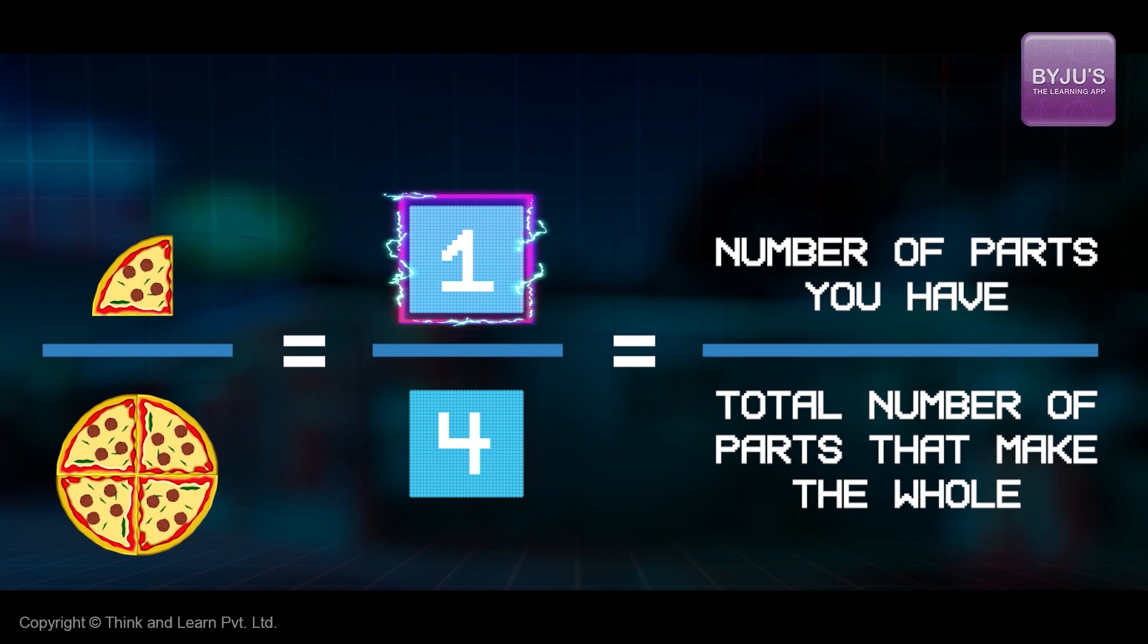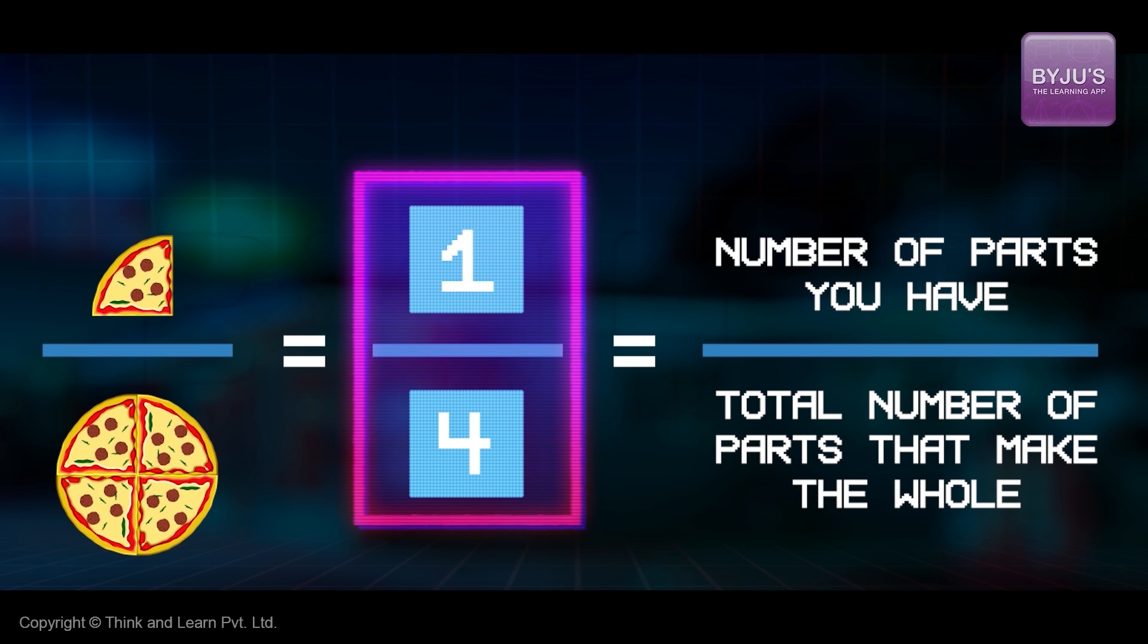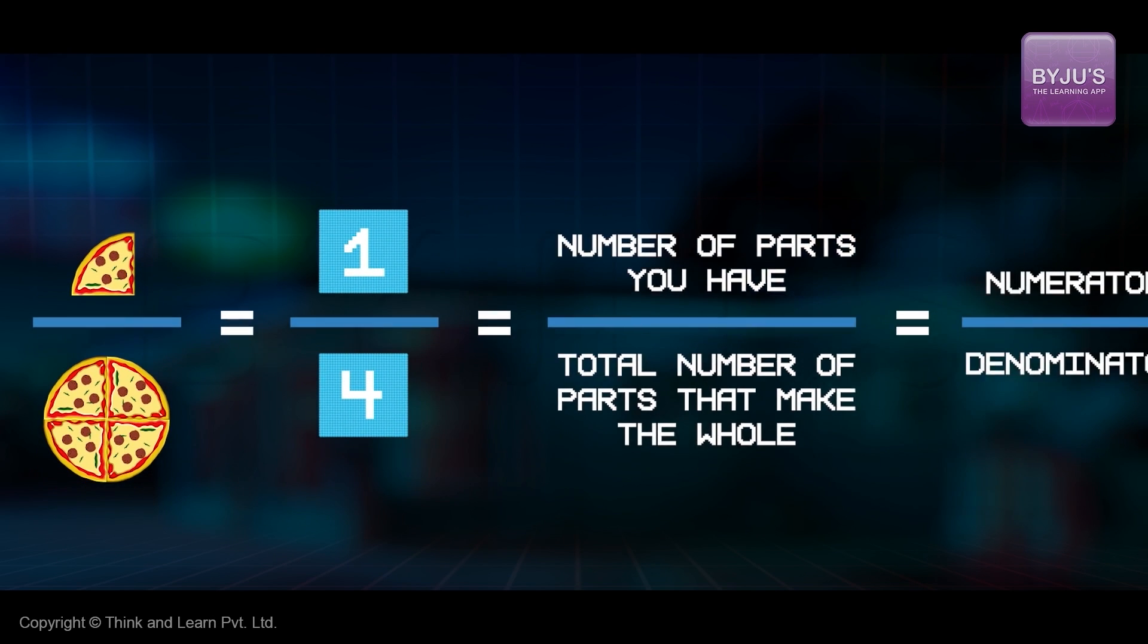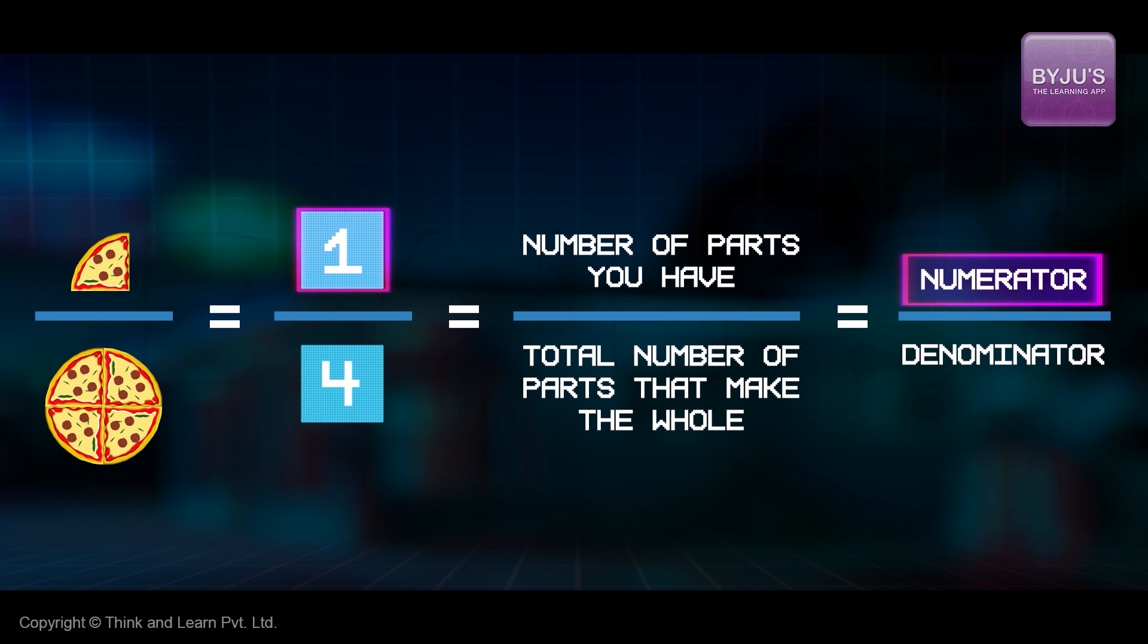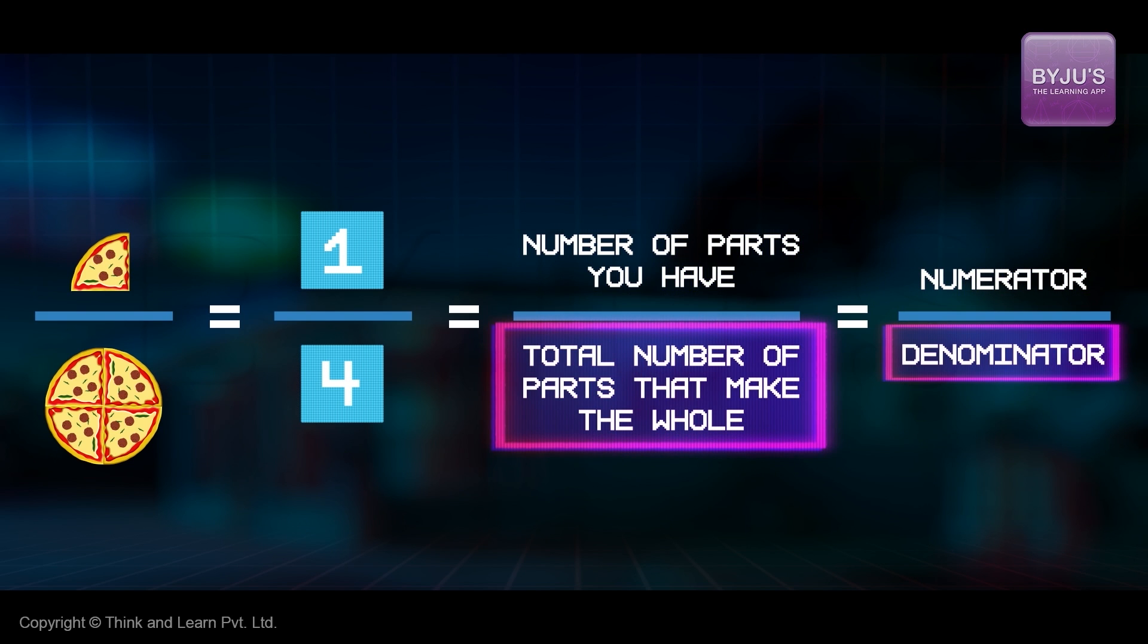In the fraction form, we write it as one by four. In this case, one is the numerator and four is the denominator. The numerator tells you how many parts you have, and the denominator tells you how many parts you initially divided your whole into.